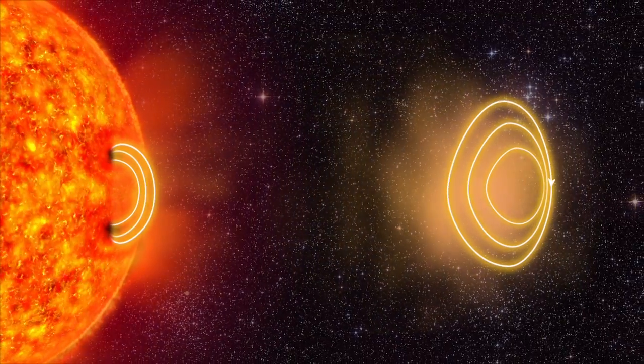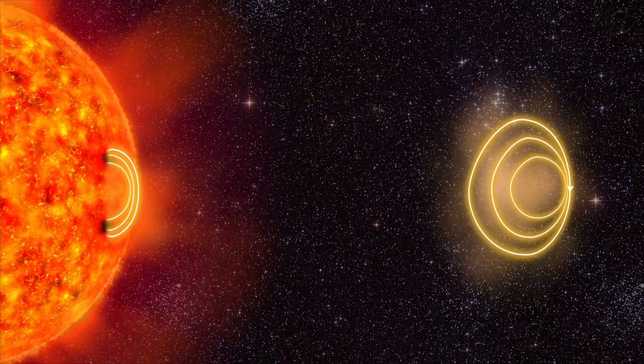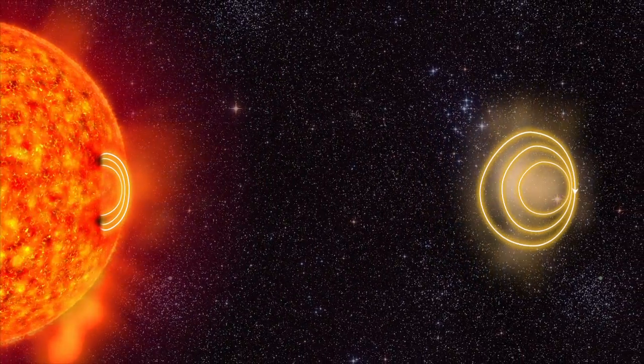Several billion tons of plasma is hurled out from the sun. This is called a solar storm.